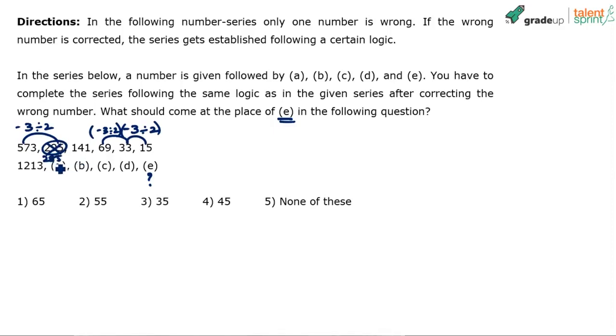285 minus 3 is 282, 282 divided by 2 is 141. 141 minus 3 is 138, 138 divided by 2 is 69. So clearly, the pattern is minus 3 divided by 2 to get the next number. That's it. Apply the same pattern to these numbers now.